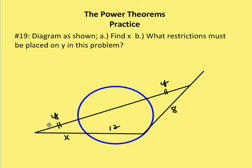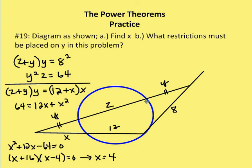Moving on to problem 19. The diagram shows a tangent and secants; find the value of X, the external portion of the secant. Labeling the internal chord segment as Z, I apply the tangent-secant power theorem: (Z plus Y) times Y equals eight squared, so Y squared plus YZ equals 64.